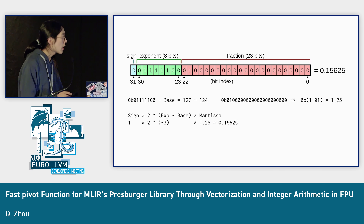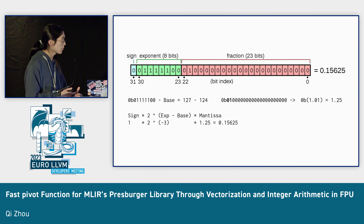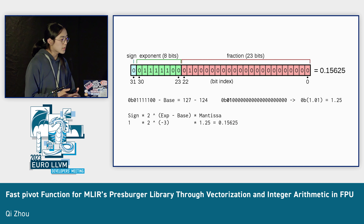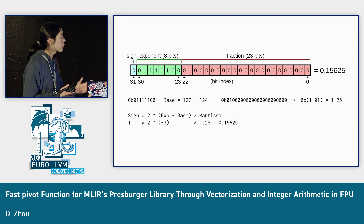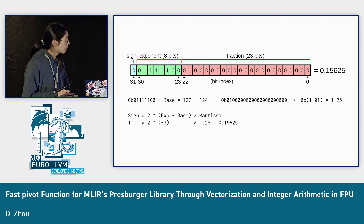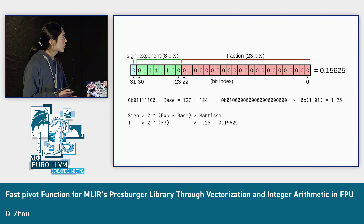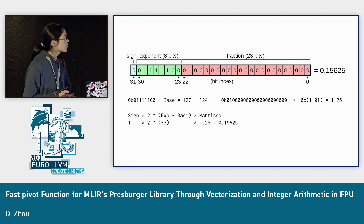The reason is how IEEE 754 works. There is one bit of sign, eight bits of exponent, and 23 bits in the mantissa. The value of this floating point data structure is the sign times 2 to the exponent's power subtract the base, and times the mantissa.